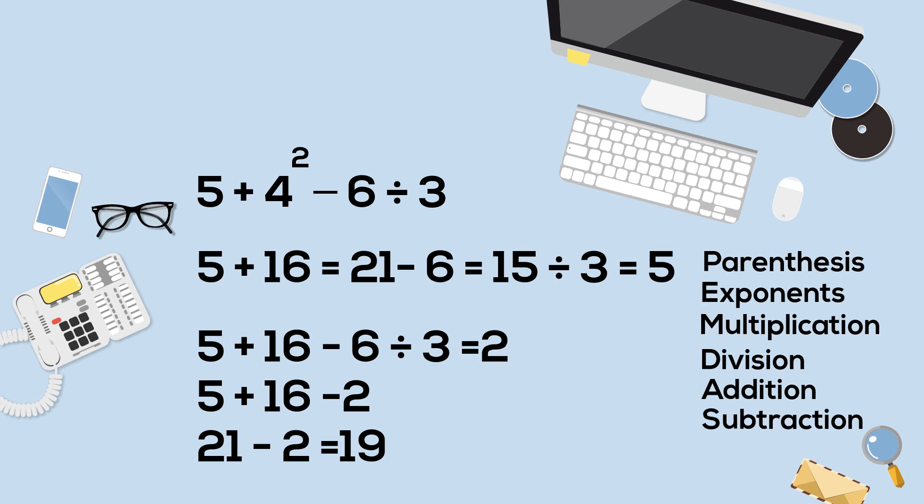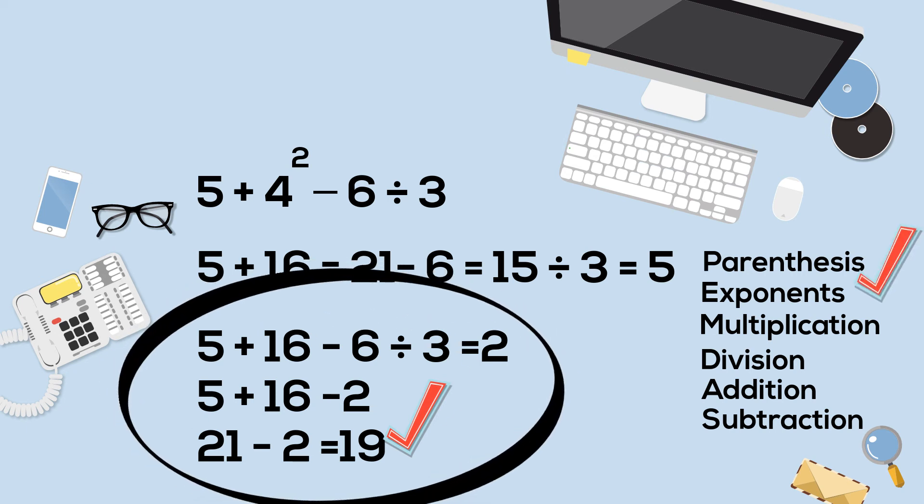The correct answer is 19. Let's see the difference. First, let's work exponents. So 4 squared is 16. Next, you complete division, so 6 divided by 3 is 2.